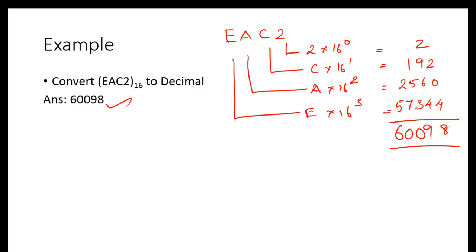The only thing you have to remember is: if you are going to convert any number system towards the equivalent decimal number system, you multiply with the radix to the weight of the bit, starting from the rightmost. This is the conversion between other number systems and the decimal number system.